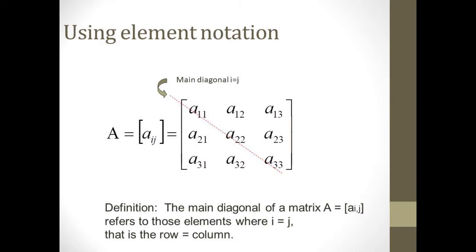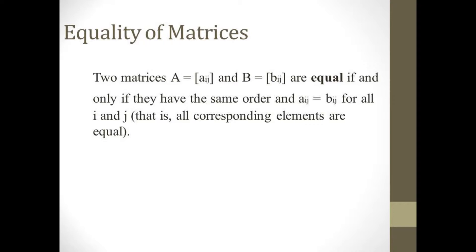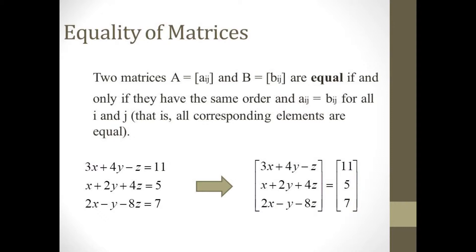For instance, we define the main diagonal of the matrix as being all the elements of the form A sub ii — that is, elements where the row is the same as the column. Likewise, we define two matrices A and B as being equal if and only if A and B have the same order, and A sub ij equals B sub ij for every i and j. Here's a simple example using this definition: we can rewrite a system of equations as two equal column matrices.